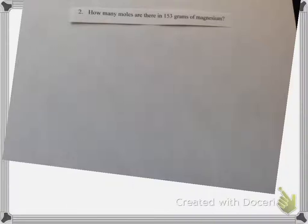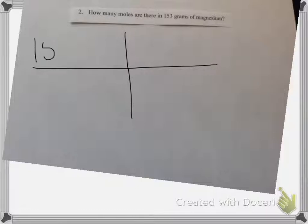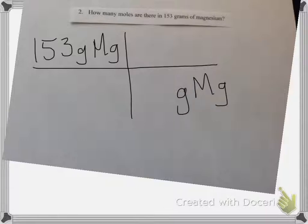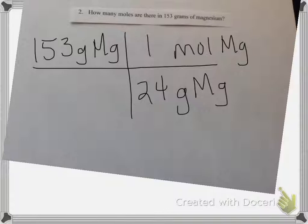Let's look at the next problem. Take a moment to read the problem and set up the t-chart with the given in the top left. You should put 153 grams in the top of your box. You should decide to put grams of Mg on the bottom since it's going to match diagonally. It's asking for moles, so I can put moles in the top because I'm allowed to relate grams to moles. Decide what numbers go next to mole and next to grams.